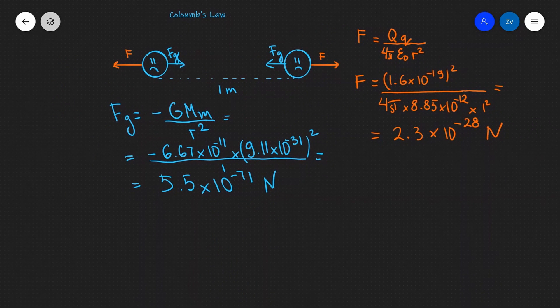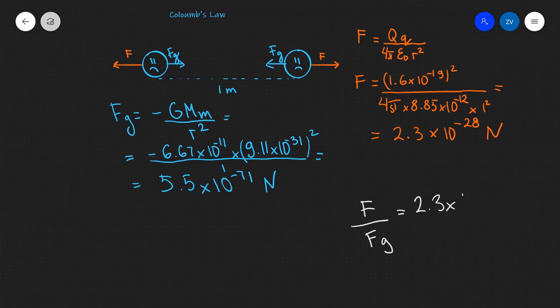I am in this particular case, this will be 2.3 divided by 10 to the power of minus 28, divided by 5.5 times 10 to the power of minus 71.